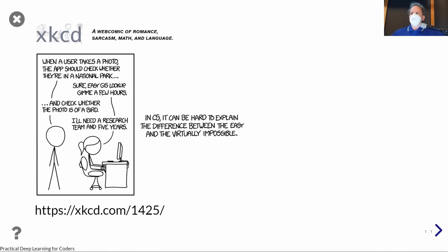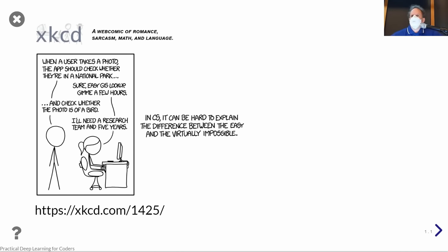Here is an XKCD from the end of 2015. The basic joke is that it can be hard to tell what's easy and what's nearly impossible. In 2015, the idea of checking whether something is a photo of a bird was considered nearly impossible — so impossible it was the basic idea of a joke. We're now going to build exactly that system for free in about two minutes.